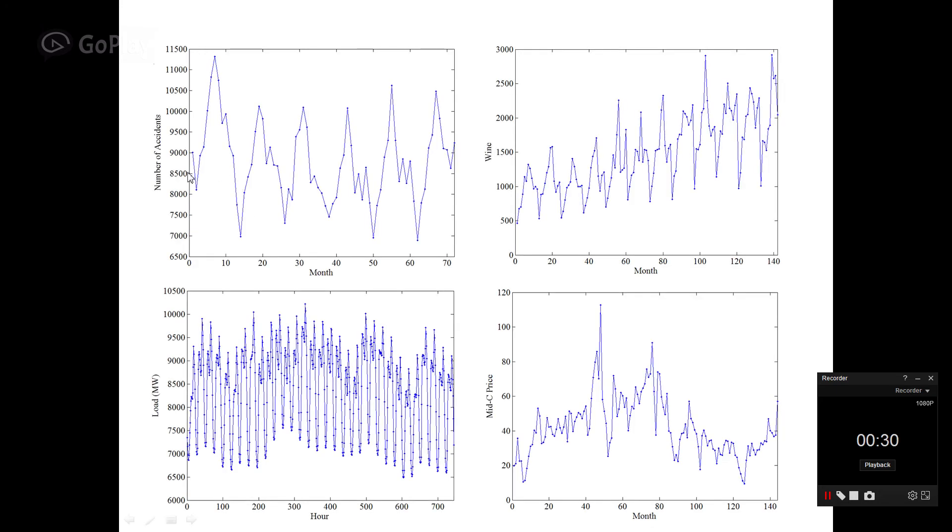For example, let's say we have historical data on number of accidents in U.S. or wine sales across different months or electrical load in B.C., British Columbia, or market price.